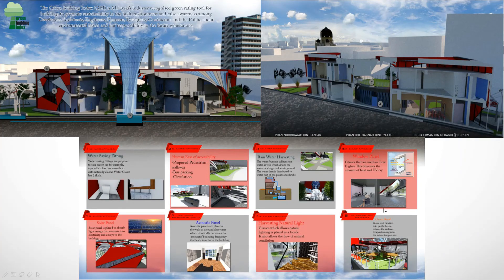Lastly, about the green building, I've rated features including water efficiency, energy efficiency, and indoor environmental quality. I've listed out items one through eight: water saving fittings, human ease or accessibility, rainwater harvesting, window panels, solar panels, acoustic panels, harvesting natural light, and lastly the green roof. These are numbers as you can see — this is partly what we have designed and we are mainly aimed to design.